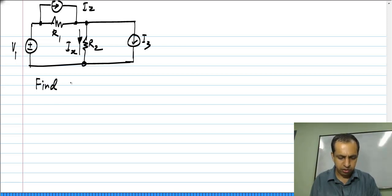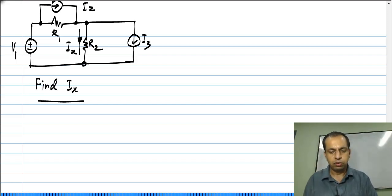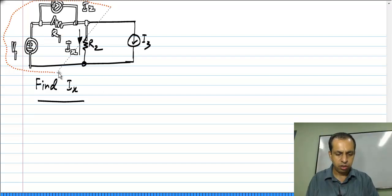The problem is to find Ix in this circuit. What do I do following my method of superposition?